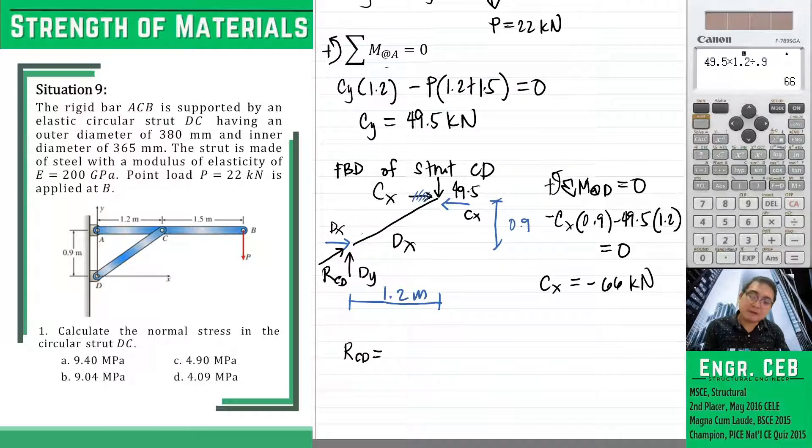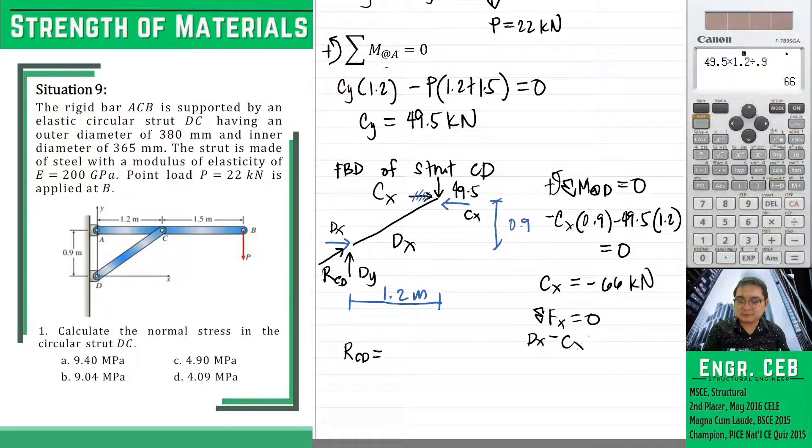If we're going to sum forces along X, notice that CX will be equal to DX. So DX equals CX. Also, if we will sum forces along the vertical, DY is also equal to CY.